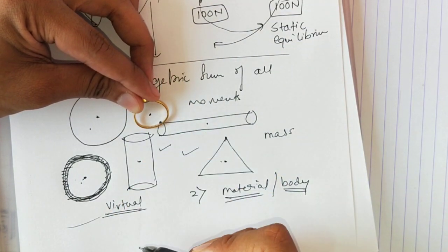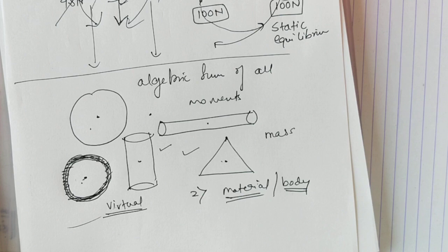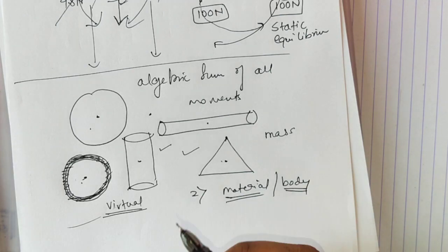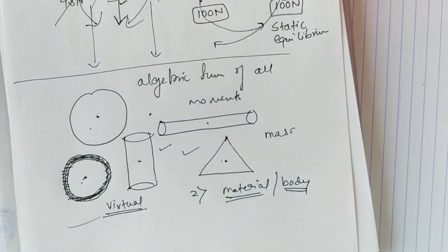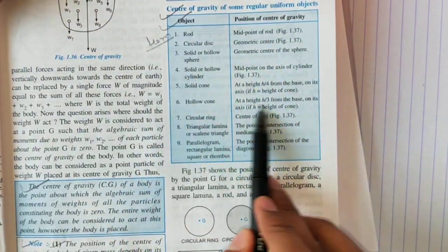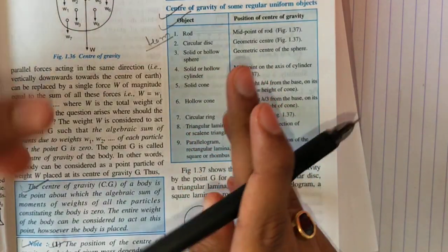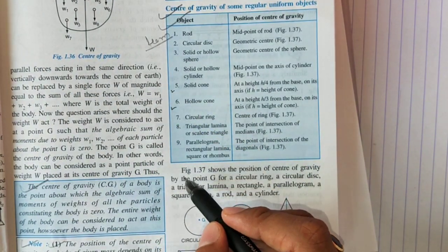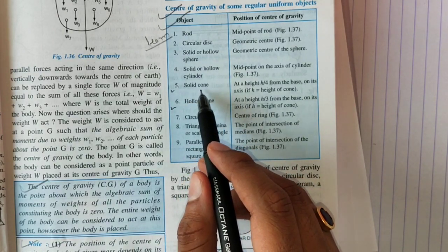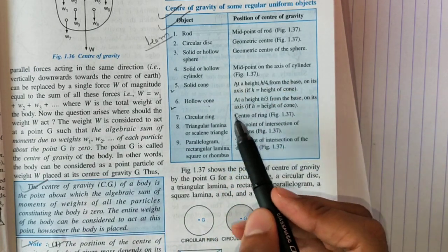In figure 1.7 and the table above it, the center of gravity of some regular objects is given. You need to learn the center of gravity of all these objects. A few are very important: the solid cone and the hollow cone. The center of gravity of a hollow cone is at a height h/3 from the base, and for a solid cone it is at h/4 from the base.